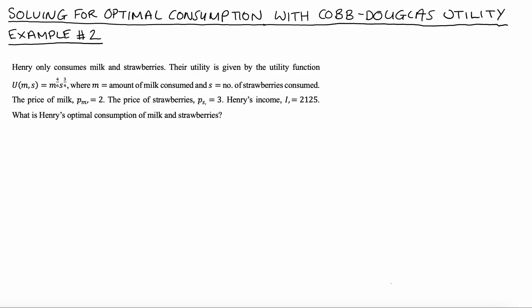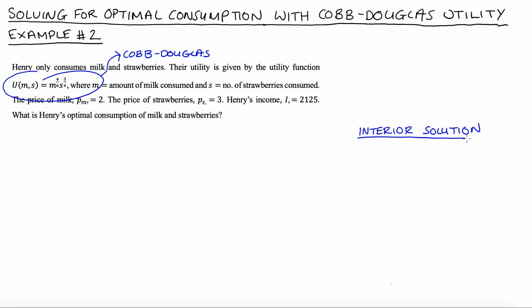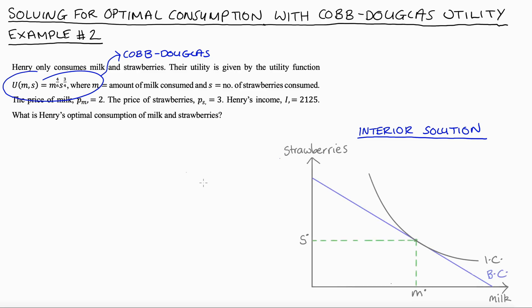Henry's utility is described by a Cobb-Douglas utility function, which means we will have what is called an interior solution, where Henry will buy positive amounts of both goods. Diagrammatically, the point of optimal consumption at m-star, s-star will be where the slope of our indifference curve equals the slope of the budget constraint. This puts Henry on the highest indifference curve given their budget constraint.